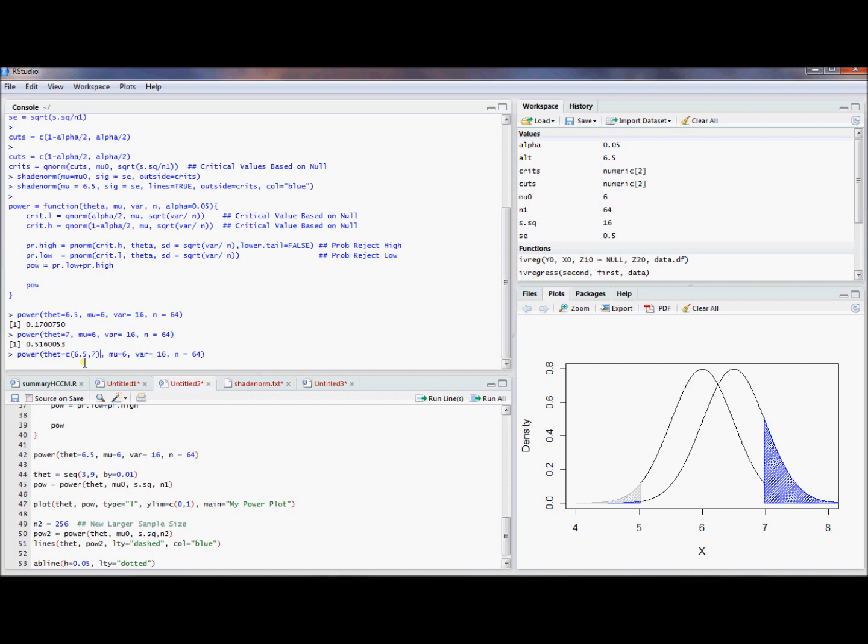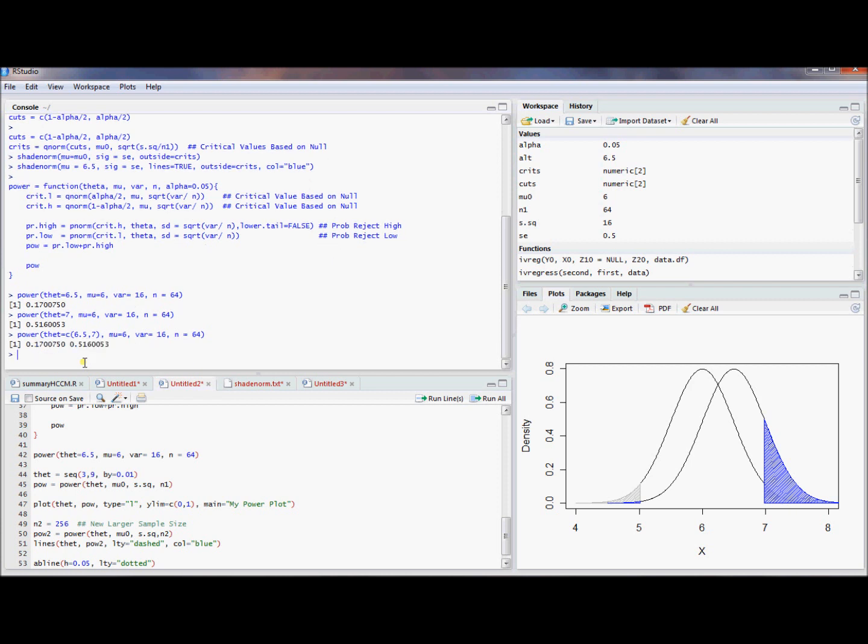Just to show you on a small scale, I could actually ask for these both at the same time. It's going to compute both of them at the same time. So theta or theta can be a vector, or it can be a scalar. It doesn't matter. It's just going to perform the same action on each element of this vector.